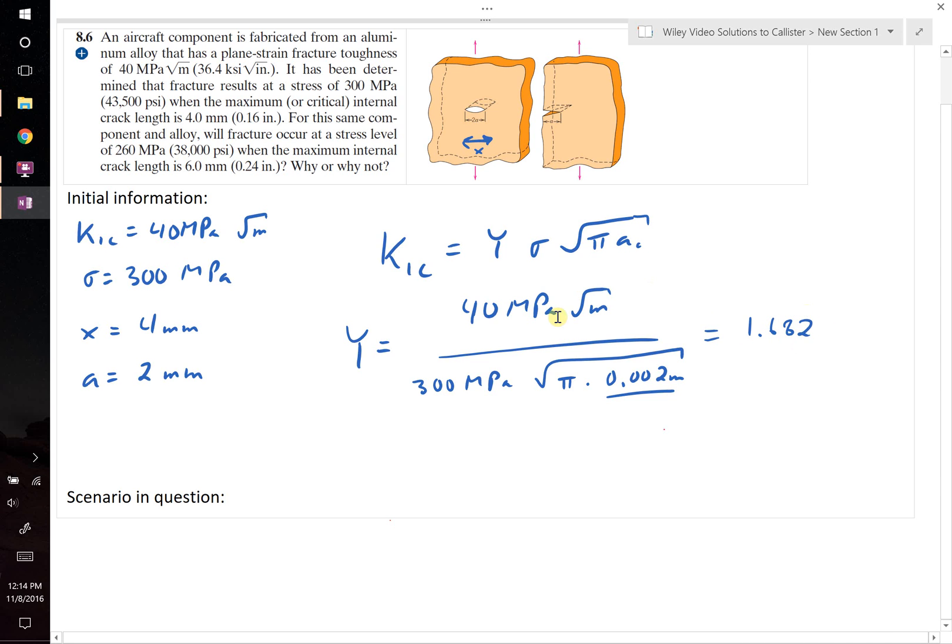Therefore, y equals 1.682, which is greater than the 1.12 which is commonly used for materials that have an A over W approaching 0, where W is the total length of our sample.